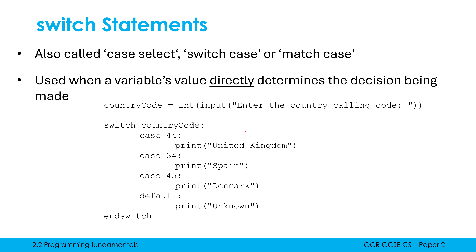Let's look at how this works. If I type in 45, which is the Danish calling code, then country code is 45. We check against each case one by one, top to bottom. 45 is not 44, 45 is not 34, but 45 is 45 — therefore we print Denmark. It won't run the default case because, like else, it gets skipped if a previous case was true.